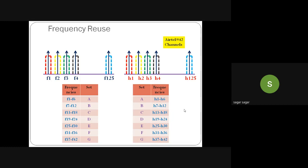If somebody wants to make a call, they need full duplex — one channel from the uplink set and one from the downlink set. So these uplink and downlink sets are clubbed together. These are the channel allocations we have.